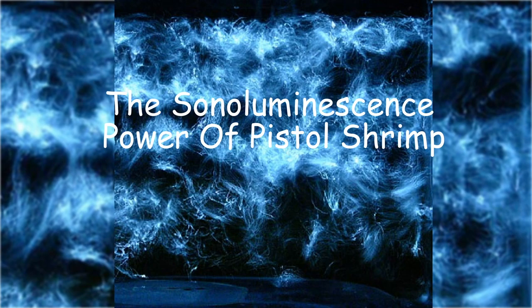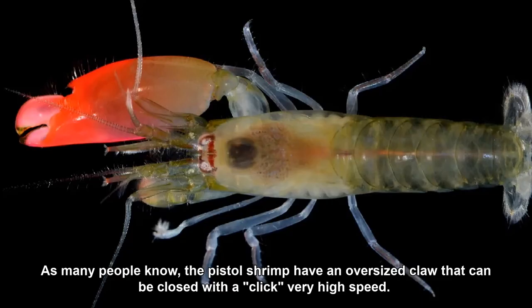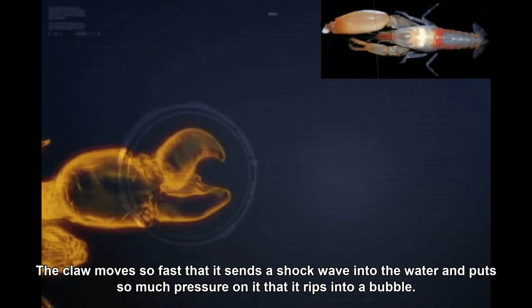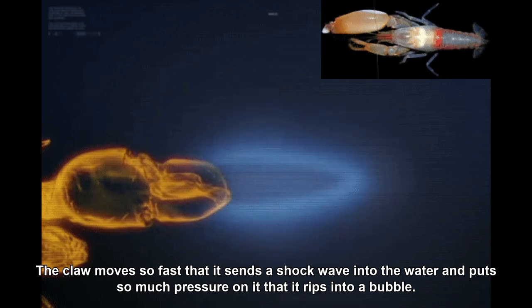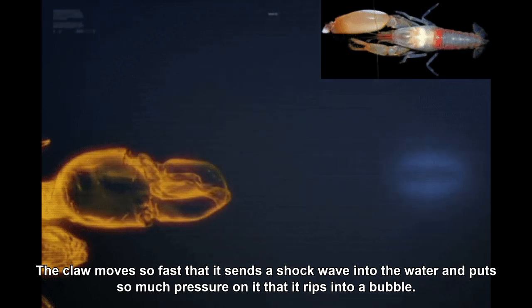The Sonoluminescence Power of Pistol Shrimp. As many people know, the pistol shrimp have an oversized claw that can be closed with a click at very high speed. The claw moves so fast that it sends a shockwave into the water and puts so much pressure on it that it rips into a bubble.